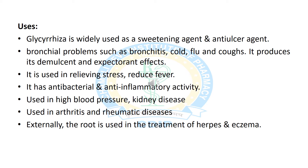The therapeutic uses of glycyrrhizinic acid include use as a sweetening agent and anti-ulcer agent. It is used in treatment of bronchitis, cold, flu, and cough, and also as an expectorant. It is used in relieving stress and reducing fever, and has antibacterial and anti-inflammatory activity. It is used in high blood pressure and kidney diseases, also in arthritis and rheumatic diseases, and externally in treatment of herpes and eczema.